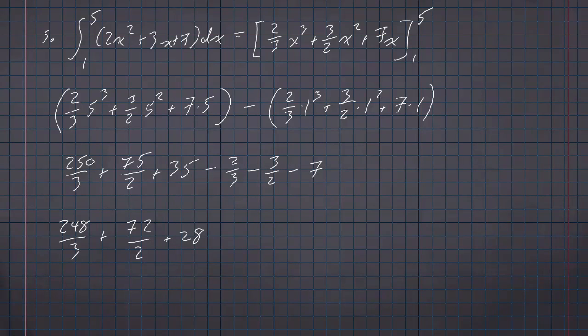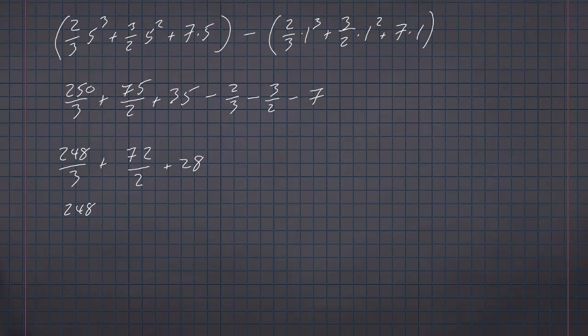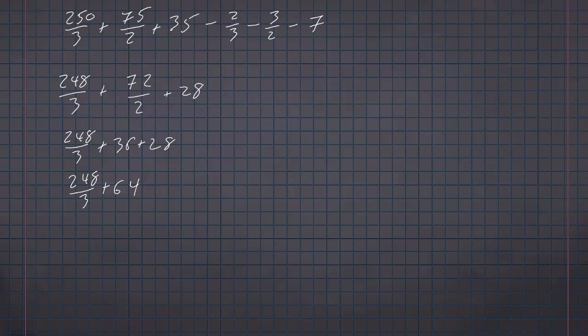248 over three unfortunately does not reduce, but 72 over two is 36. And 36 plus 28 is 64. 192 over three, which is the same thing as 192 over three.